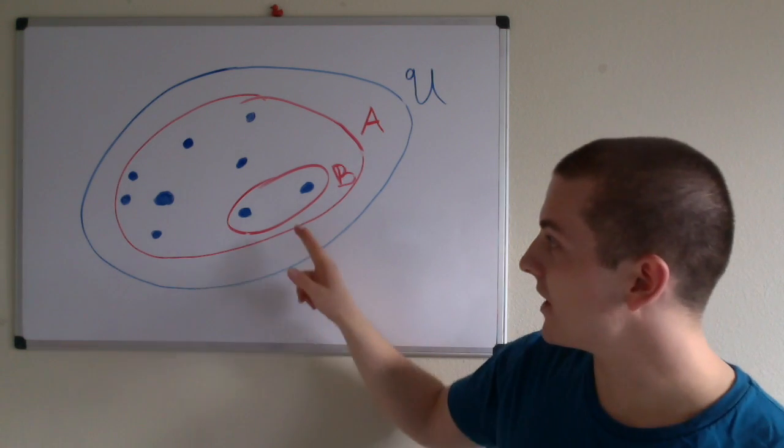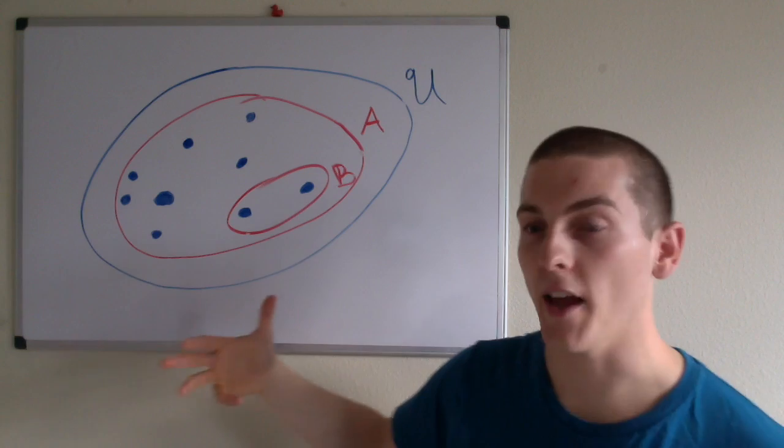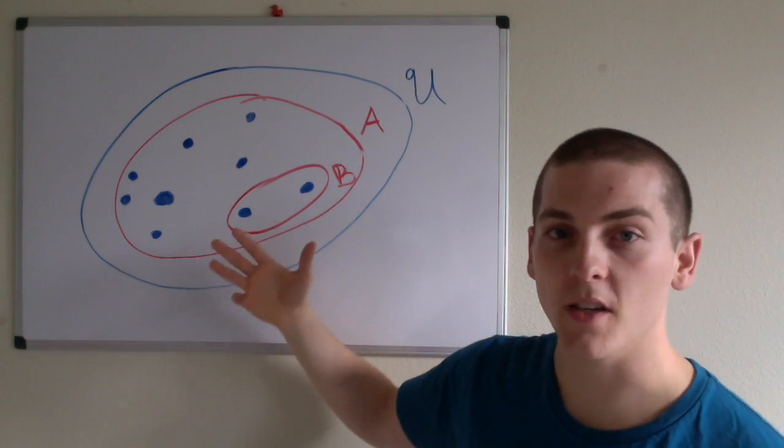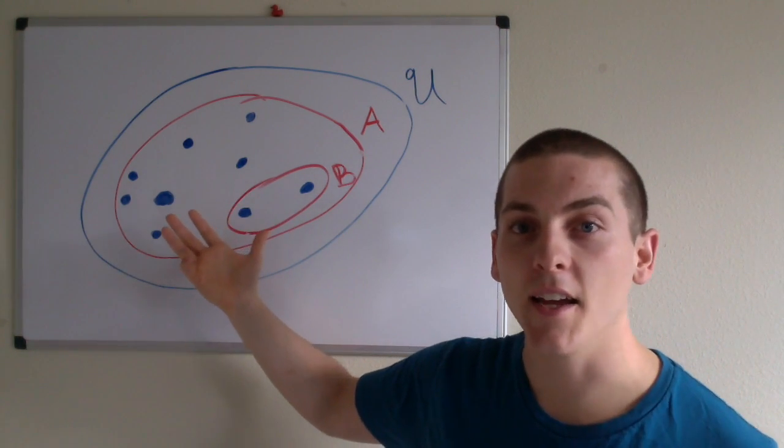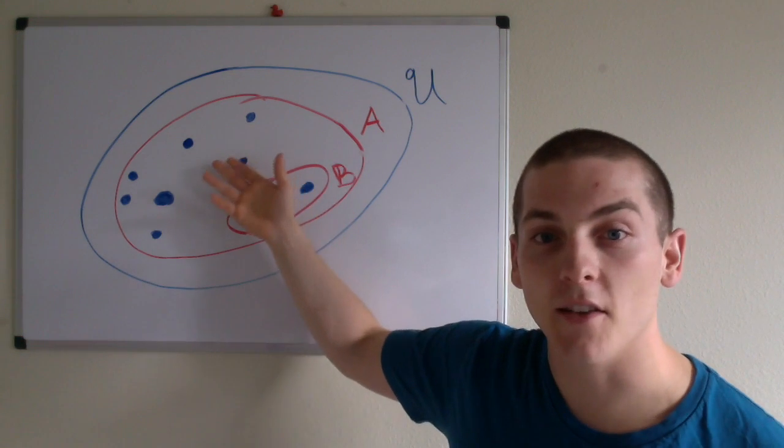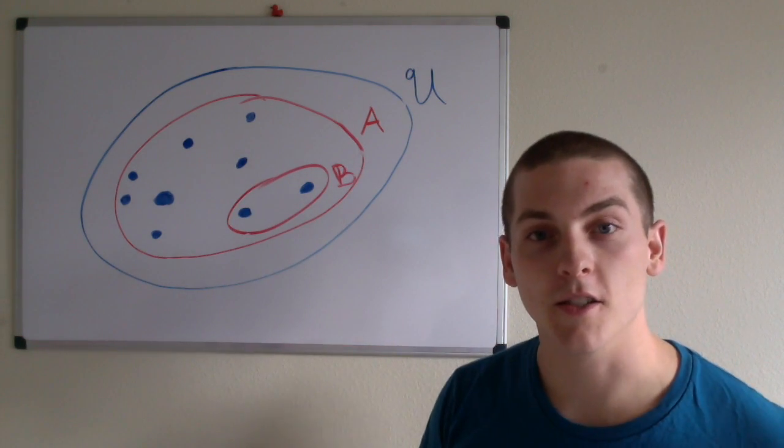We can also say that B is a proper subset of A because all elements of B are elements of A and there are elements of A that are not within the set B.